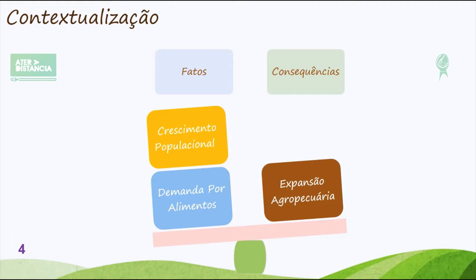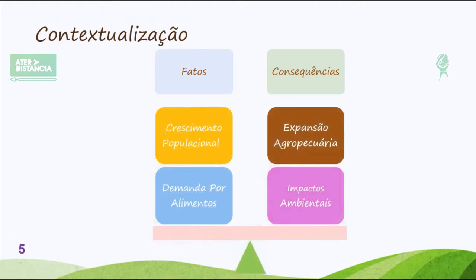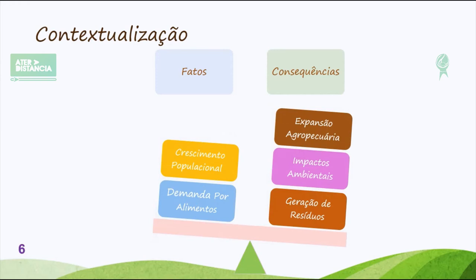Um dos impactos diretos em relação aos impactos ambientais é a necessidade dessa remoção da camada de vegetação dessas áreas. Então, eu vou ter ali um solo que vai estar exposto, materiais que podem ser carregados para os rios, causando um processo de assoreamento. Além disso, como consequência, o aumento da população e alterações no microclima das regiões. É inerente às atividades agrícolas que toda atividade agrícola vai estar gerando esses resíduos, principalmente os resíduos orgânicos.